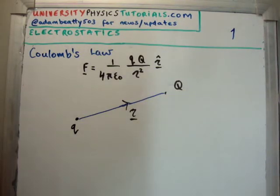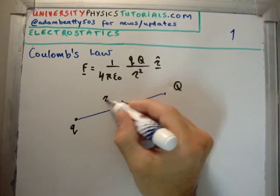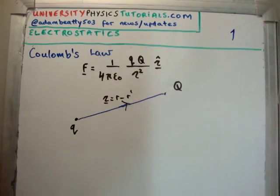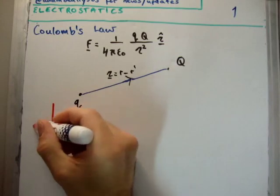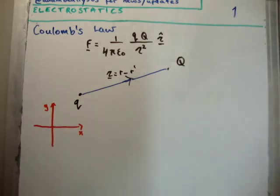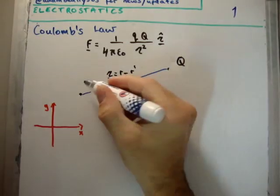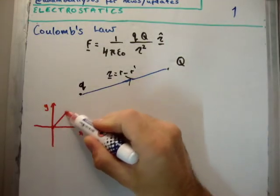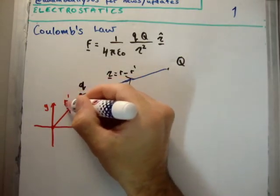Now what is the definition of the separation vector? I'm going to write it in here. So the separation vector is equal to R minus R prime. Now you might say, well what is R? What is R prime? So let's think about our Cartesian coordinate system. We have our x-axis and we have our y-axis. So every point in space has an associated vector with it. I'm just going to write my source charge up here, because if I go from the origin to my source charge I have a vector.